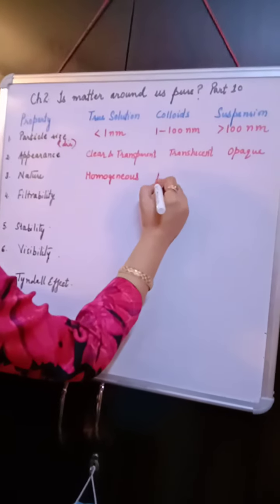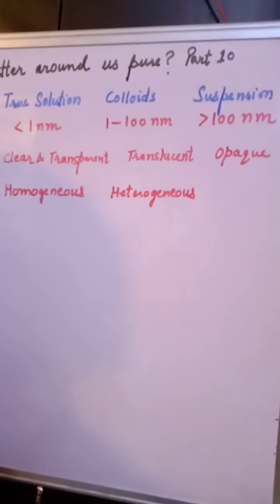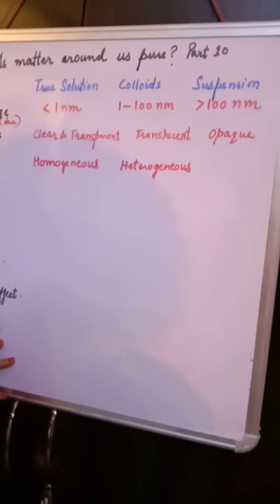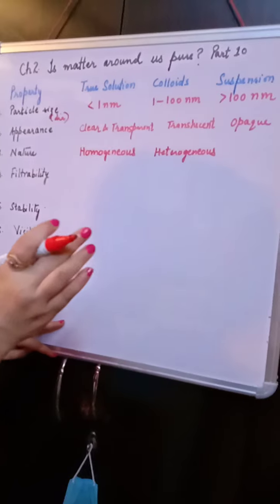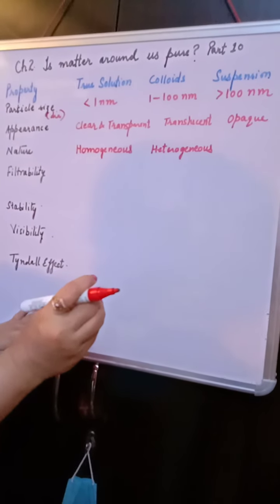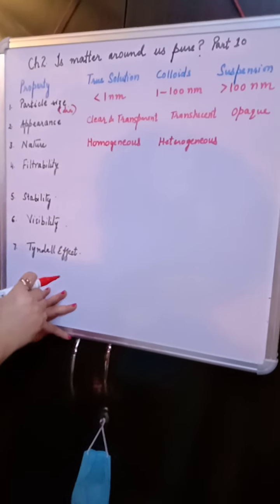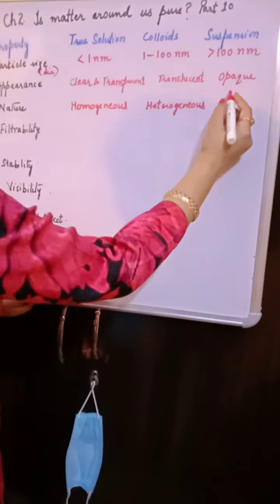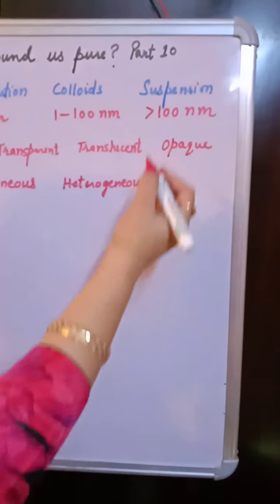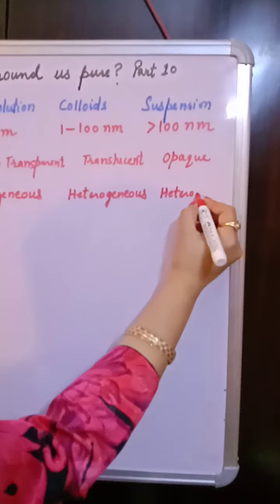Colloids appear to be homogeneous but are actually heterogeneous. The best way to verify this is to centrifuge milk — you will be able to see two layers separate, showing that fat is present along with water. This confirms colloids are heterogeneous. Suspension particles are so big that you can easily see them, so suspension is obviously heterogeneous.